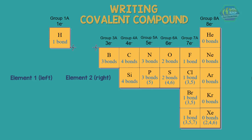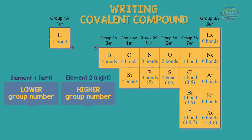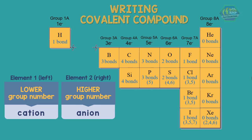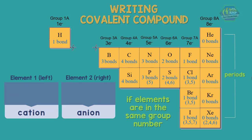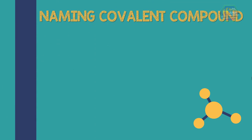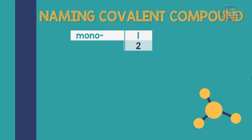Commonly, when elements combine to form a covalent compound, the element under the lower group number is on the left and the element under the higher group number is on the right. This means that the element under the lower group number acts as the cation and the element under the higher group number acts as the anion. If the combined elements are in the same group number, the one with the higher period acts as cation and the one with the lower period is the anion.